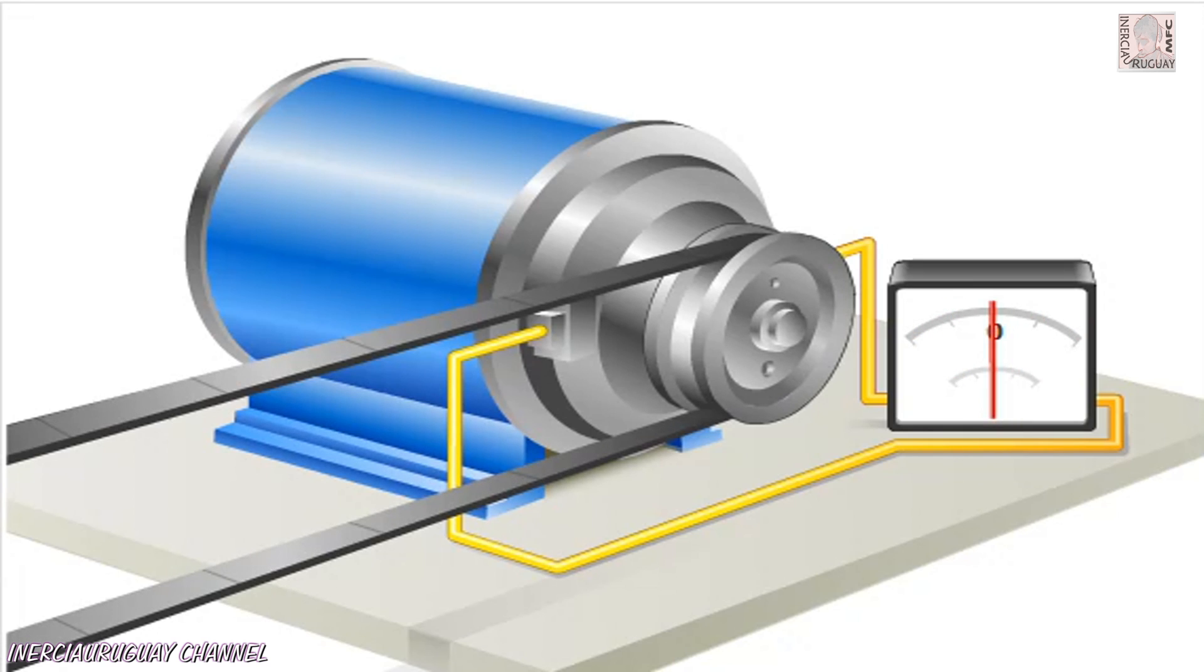An electric generator converts mechanical energy into electrical energy. An AC generator produces alternating current that keeps reversing its direction of flow.